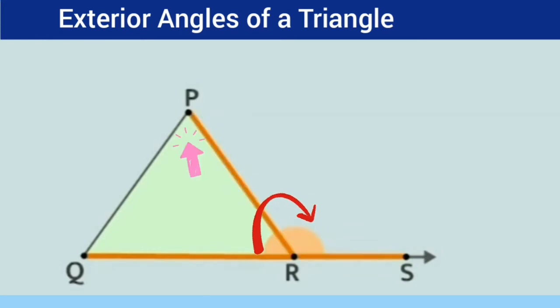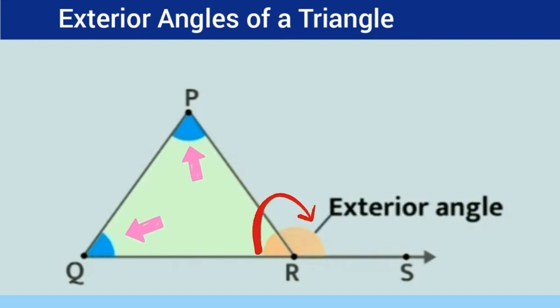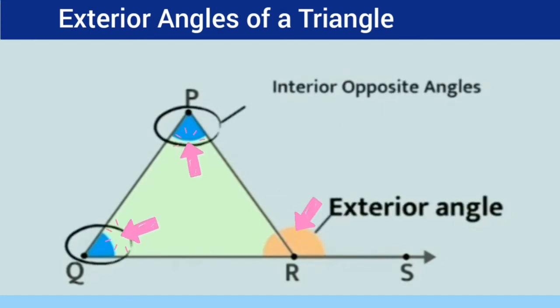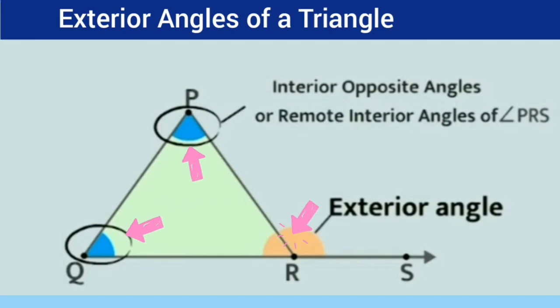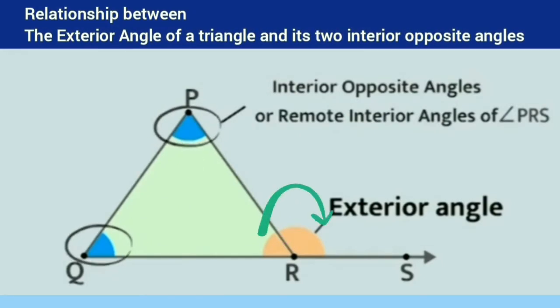Angle RPQ and angle RQP are interior opposite angles, or remote interior angles, of angle PRS. Let us understand the relationship between the exterior angle of a triangle and its two interior opposite angles.